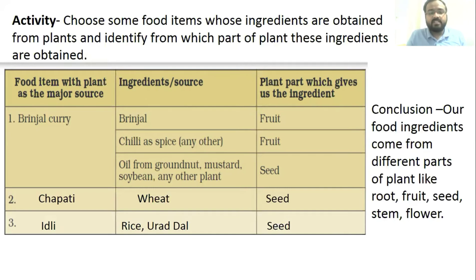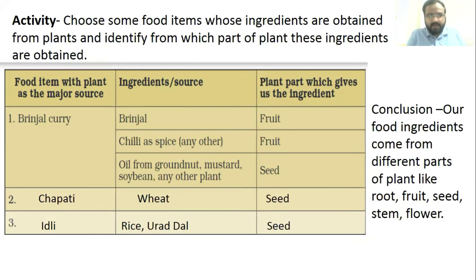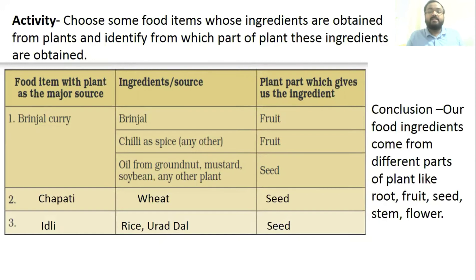Next is chapati — the ingredient used is wheat, which is obtained from the seeds of the wheat plant. Next is idli — the main ingredients are rice and urad dal, and both are obtained from seeds of their respective plants. You can also write down two or three food items and identify from which part of the plant their ingredients are obtained.